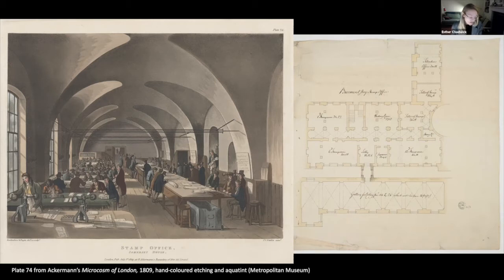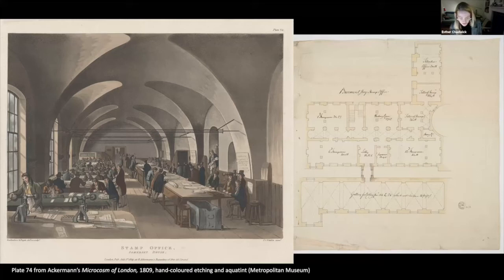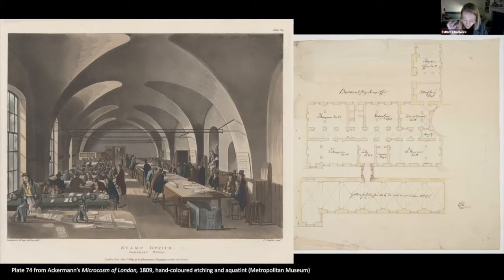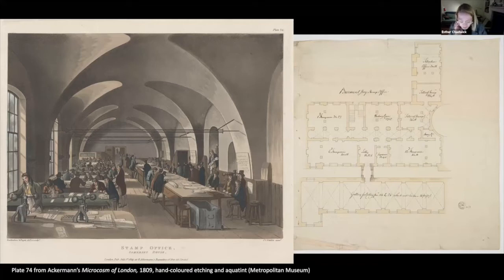The stamp office was in some ways a microcosm of Smithian economy, with workers occupying highly specialist roles. Among the rolling press printers, for example, was a layer out, a damper of newspaper, an opener and marker up, and a damper of country notes. It was also a space of surveillance. In the dry room was a superintendent of the stamping tables — perhaps one of the figures pictured in this 1809 print — whose job was to monitor the workers in order to prevent fraud.